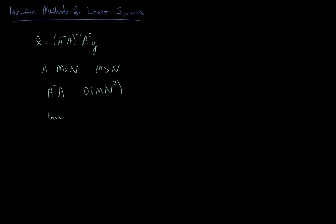And then once we have A transpose A, we'll need to invert it, and that's going to generally cost us order n cubed computations. Note that if m is greater than n, it's actually the cost of just forming A transpose A that might appear to dominate here. In either case, though, if n is large, these costs get very big.